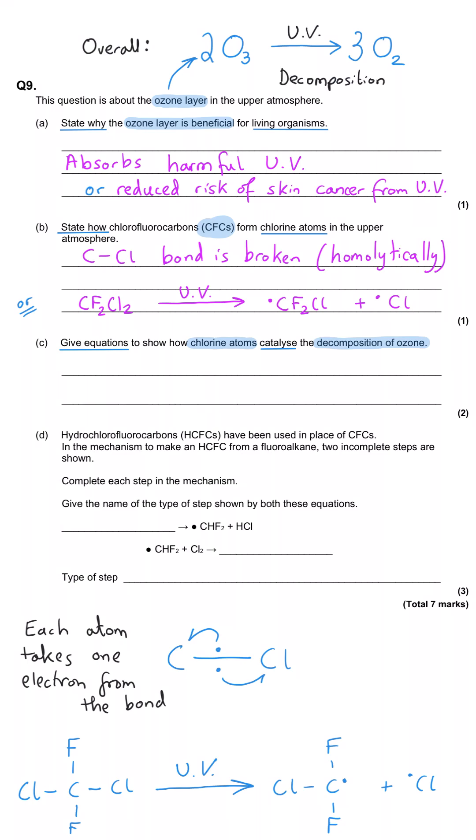And what we're about to write in part C are the two separate steps that happen and provide us with this overall reaction. And so what happens is chlorine reacts with the ozone and we end up making this ClO free radical and oxygen.